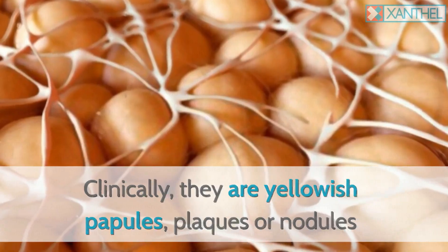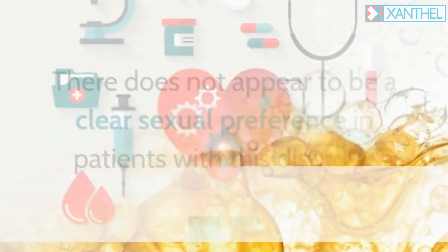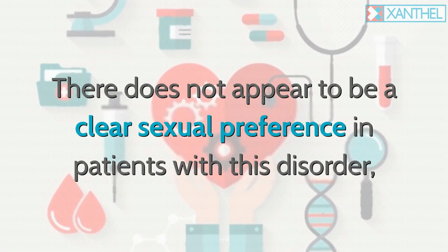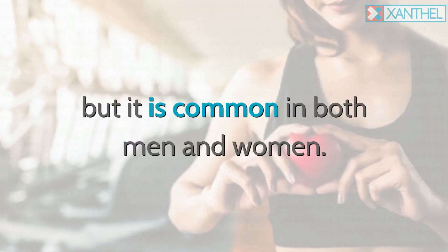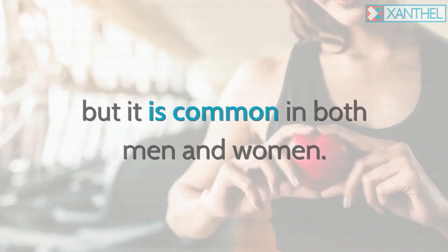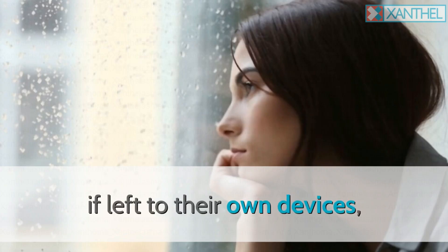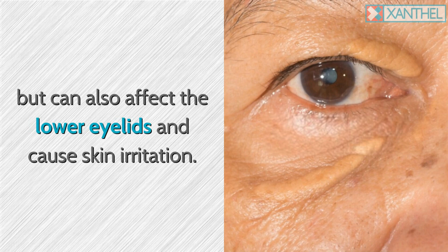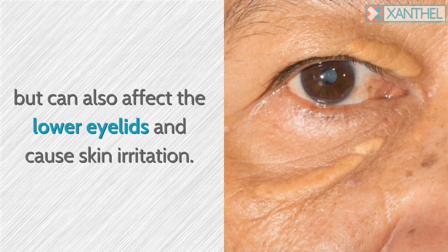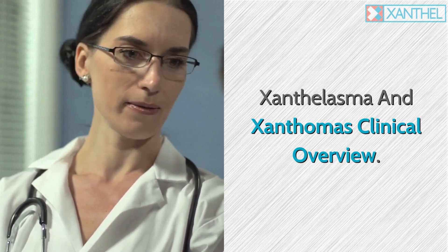The presence or absence of lipids can also cause hereditary and or acquired obesity. Clinically, xanthalasma lesions are yellowish papules, plaques, or nodules with a soft consistency that can be semi-firm or hard. There does not appear to be a clear sexual preference, as the condition is common in both men and women. The lesions are usually embedded and spread over the entire upper eyelid, but can also affect the lower eyelids and cause skin irritation.